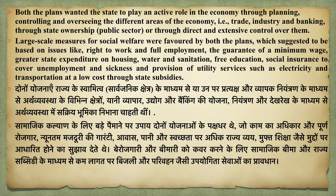Both plans focused on the active role of the state in developing the economy through planning. Both the Bombay plan and National Planning Committee focused on trade, industry, banking, and state ownership in the public sector, as well as direct and extensive control of the state over industry-related activities and planning. Large-scale social welfare measures were favoured by both plans — including the right to work, full employment, guarantee of minimum wages, and greater state expenditure.